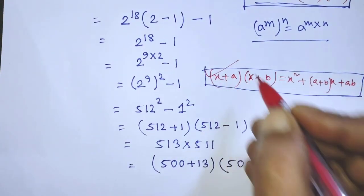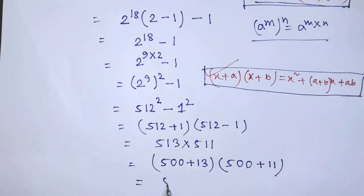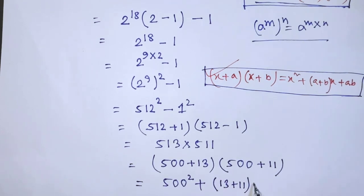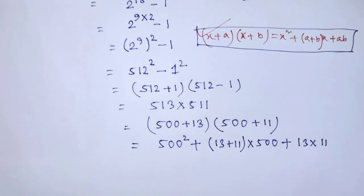According to this formula, it will be 500 whole to the power 2 plus 13 plus 11 times 500 plus 13 times 11.